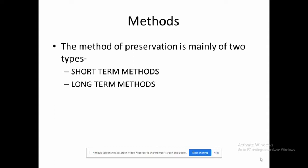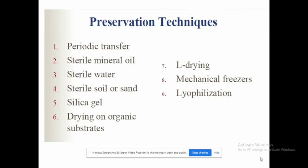These three primary methods are further broadly divided into two kinds: short-term methods and long-term methods. The list of methods includes periodic transfer, sterile mineral oil, sterile water, sterile soil or sand, silica gel, drying on organic substances, L-drying, mechanical freezers, lyophilization, and cryopreservation. These are the methods used for preservation of fungal culture.